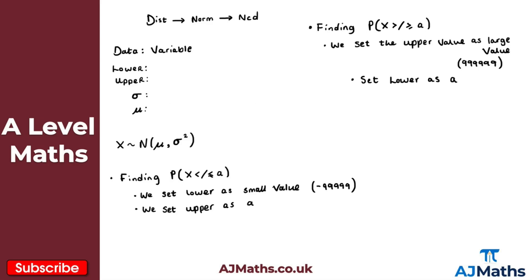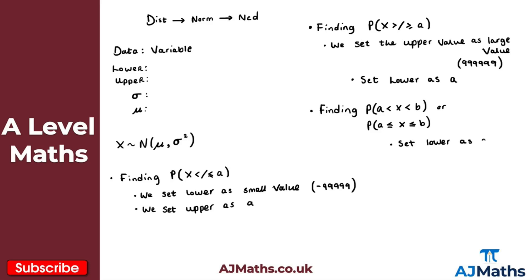Finally, the last case to consider is finding the probability that our random variable x is between two given values - for example between a and b. Again, it doesn't matter whether the inequalities are strict or inclusive since we can use these interchangeably. What we do here is simply set the lower as a and the upper as b. That's probably the most straightforward of the three different types - you literally put a as your lower value and b as your upper value.